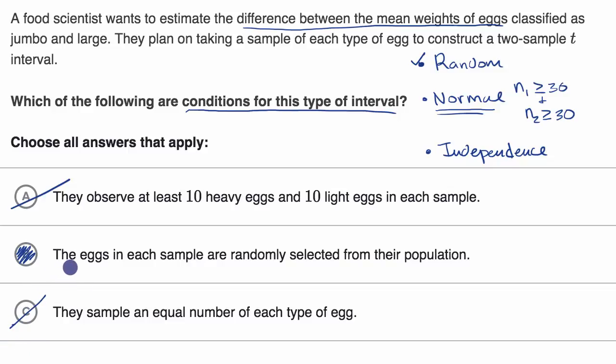So right over here, they have listed the random condition. They could have also listed the normal condition and the independence condition.